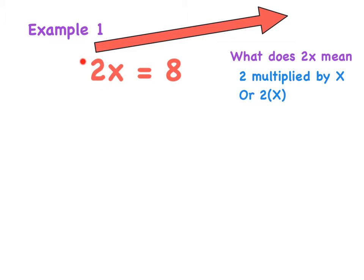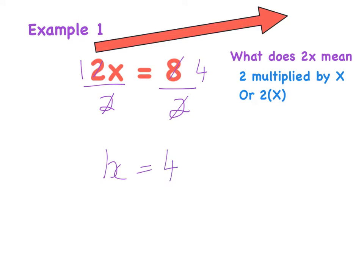If it's a multiplication, the thing I can do to get rid of that is divide. So if I divide this side by 2, remember we're all about balancing — I must also divide the other side by 2. Two goes into 2 once, so I'm left with 1 here. And 2 goes into 8 four times. My new line is 1x equals 4, and we can write that as x equals 4, which is what I wanted: the value for x.